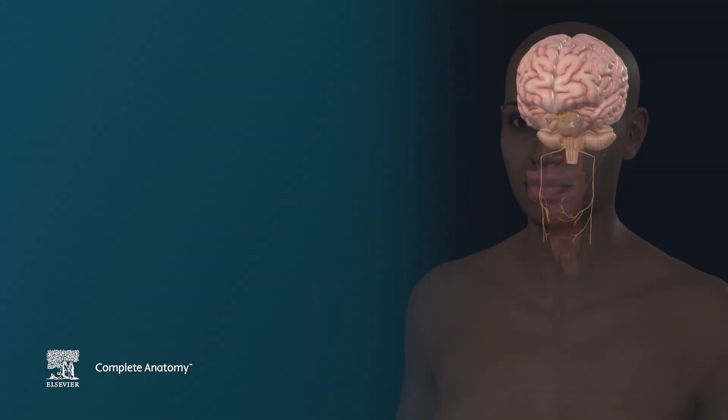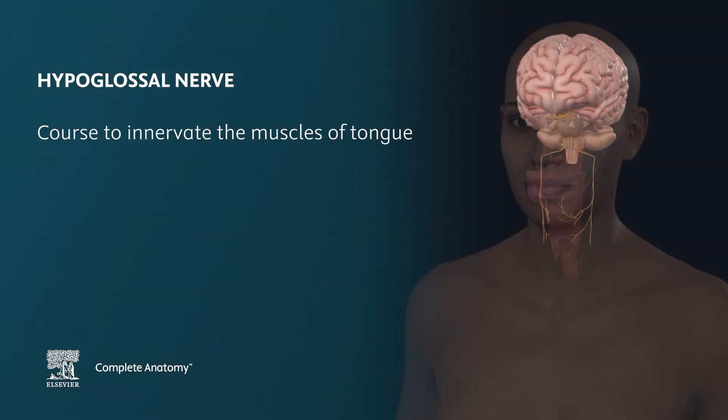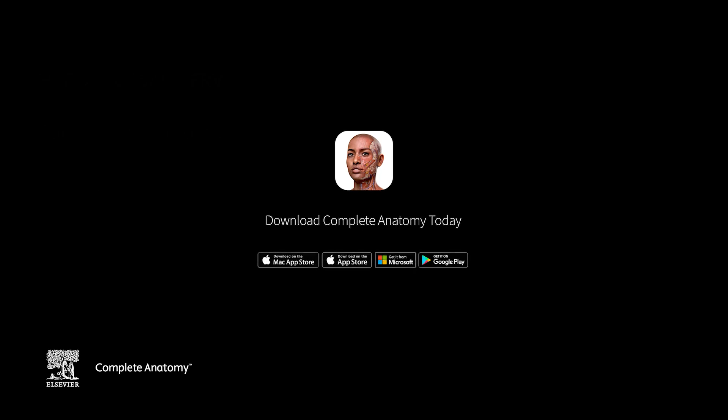Hopefully now you have a better understanding of the hypoglossal nerve, including its course to innervate the muscles of the tongue, as well as the motor functions applied there. Check out Complete Anatomy to learn more.